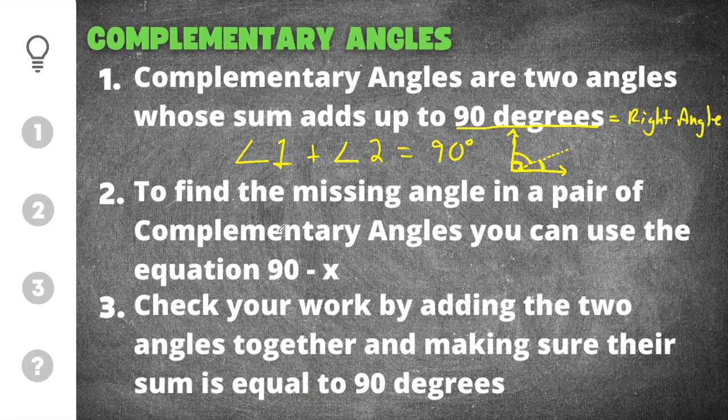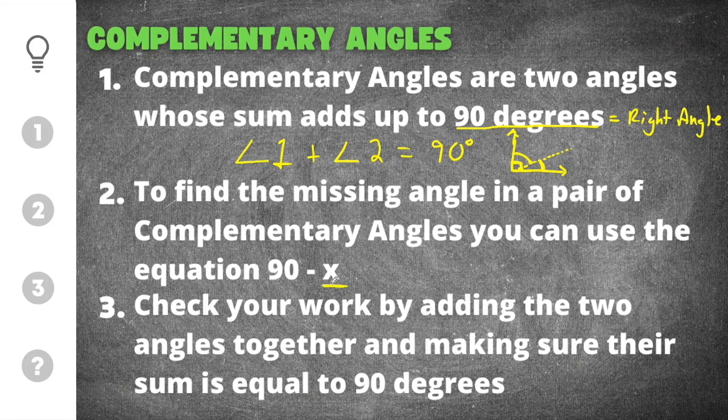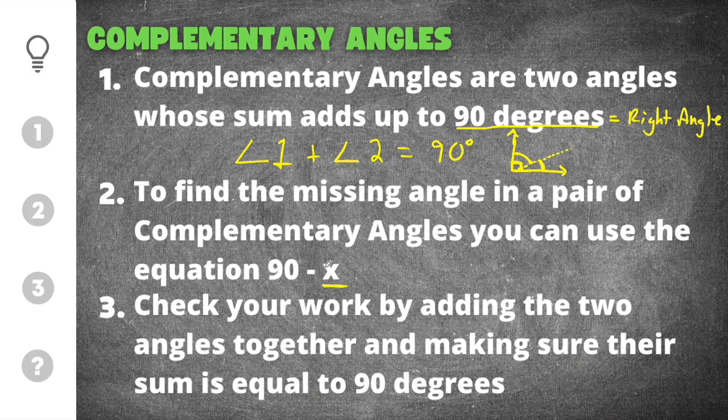In order to find the missing angle in a pair of complementary angles, you can use the equation 90 minus x. Now x in this case is the angle you know. So whatever angle you actually have, you're just going to do 90 minus that angle, and whatever that answer is is going to be your solution.